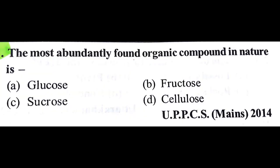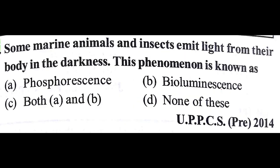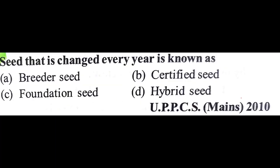The most abundantly found organic compound in nature is cellulose — answer is D. Some marine animals and insects emit light from their body in the darkness; this phenomenon is known as bioluminescence. Seed that is changed every year is known as hybrid seed; we cannot reuse seeds obtained from hybrid seed plantations.